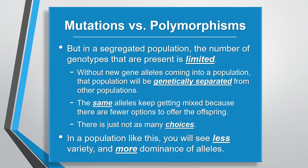However, in a population that's been segregated, the number of genotypes present is limited. Without new gene alleles coming into a population, that population will be genetically separated from others. During fertilization, the same alleles just keep getting mixed. Since there are fewer options, there are just not as many choices. In a population like this you'll see less variety and more dominance of alleles. This is the reason you can go to parts of the world where people have been living together for a long time and see certain phenotypic traits dominate.